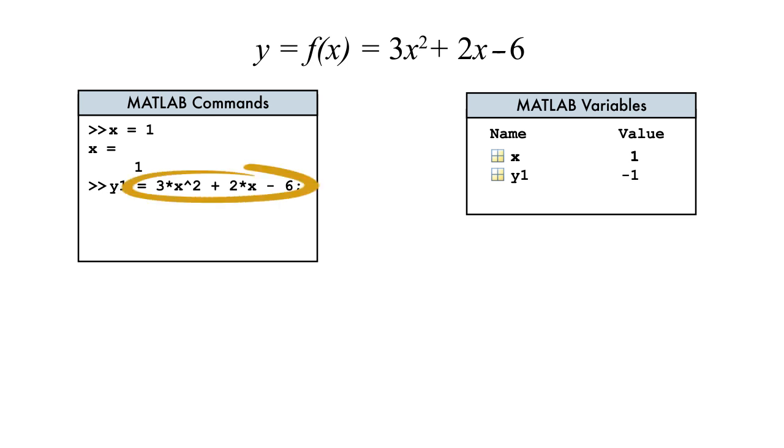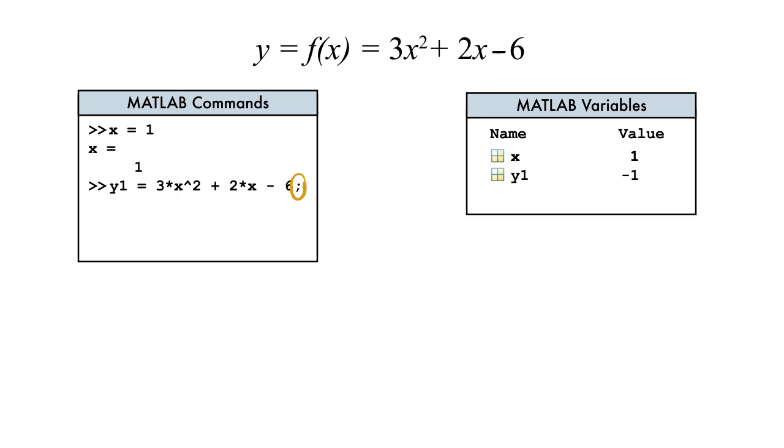The expression to the right of the assignment operator is evaluated using the current value of x. Then the result is assigned to the variable. Notice that y1 is in memory, but the result was not displayed. That's because we ended the statement with a semicolon, which prevents output from being shown.